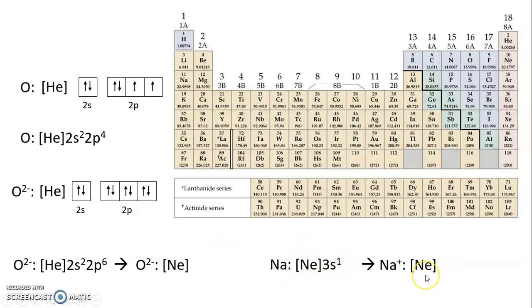which means that it loses that outermost valence electron in the 3s shell, and it just attains the configuration of neon. So both oxide and sodium ion have the same electron configuration, which is that of neon.